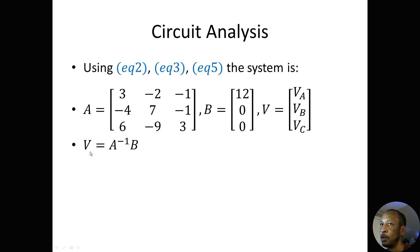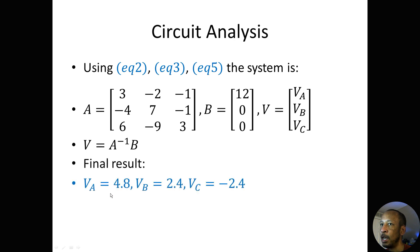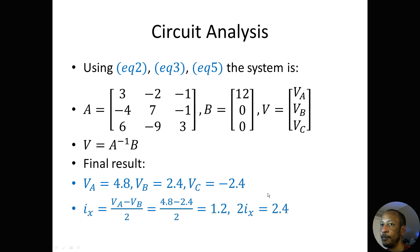Computing V equals the inverse of A times B, we get: VA equals 4.8, VB equals 2.4, VC equals negative 2.4. From this, IX equals VA minus VB over 2, which equals 4.8 minus 2.4 over 2, which equals 1.2. Therefore 2 IX equals 2.4.